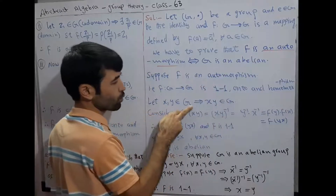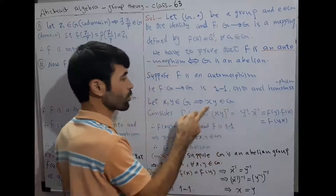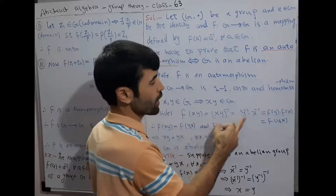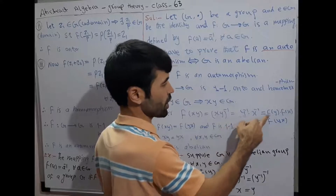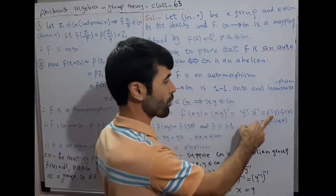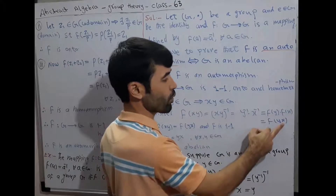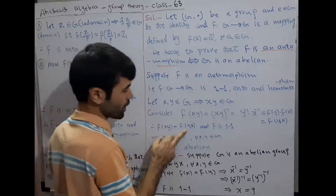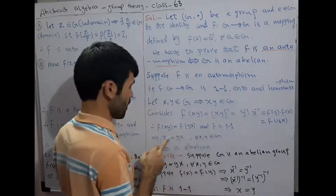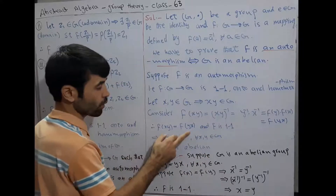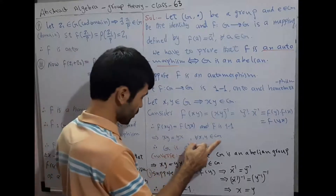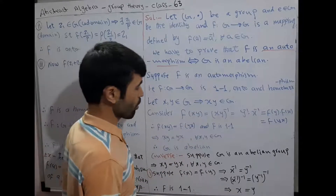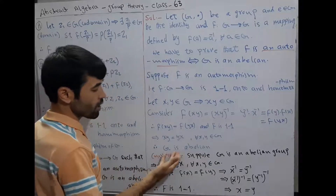Let x, y belong to G. This implies x·y also belongs to G since G is a group (closure axiom). Consider: F(x·y) = (x·y)⁻¹ = y⁻¹·x⁻¹ = F(y)·F(x). Since F is one-one, F(x·y) = F(y·x), which implies x·y = y·x for all x, y in G. Therefore, G is an abelian group.